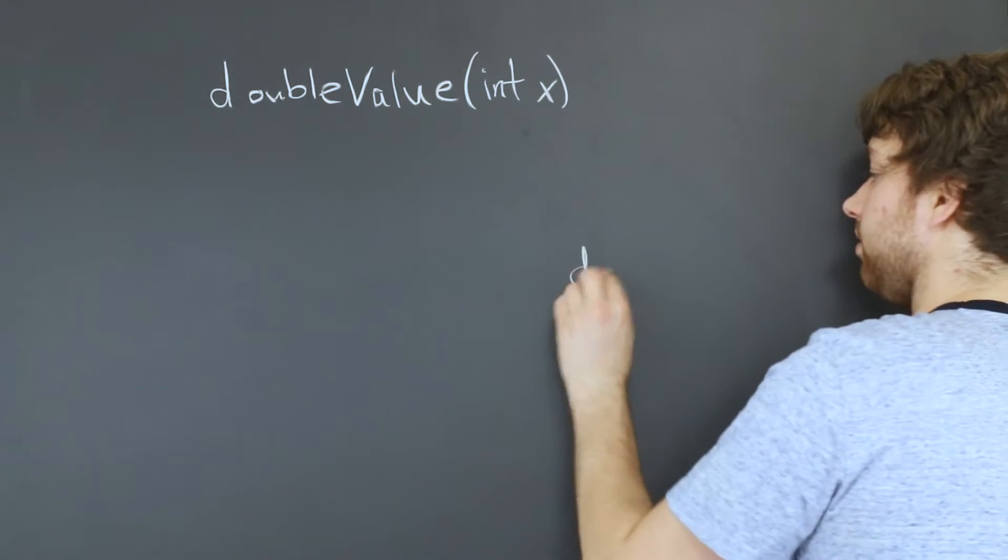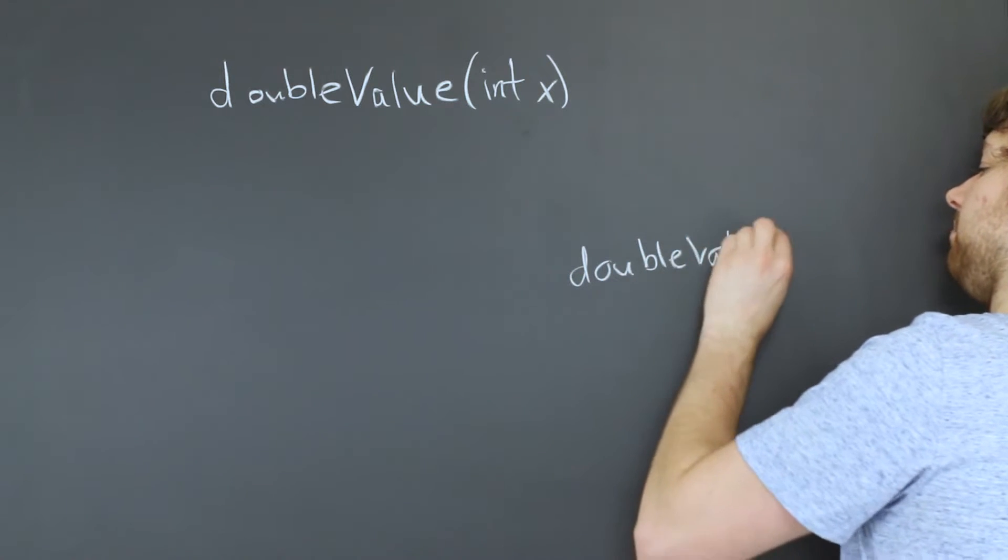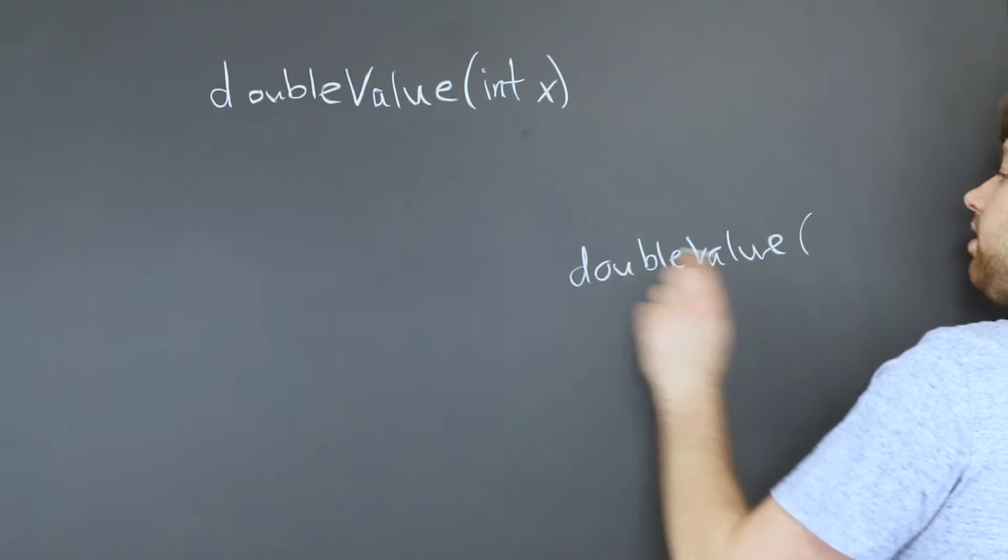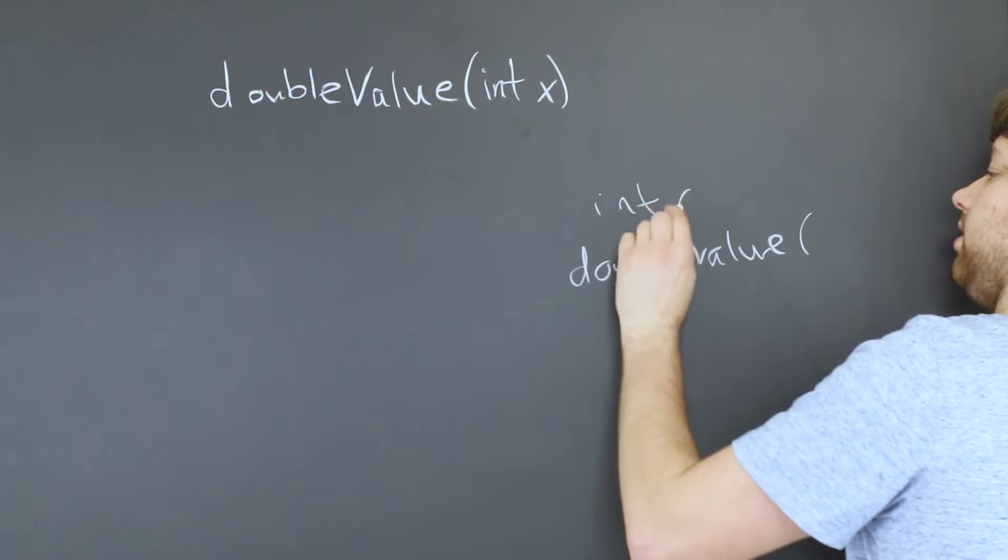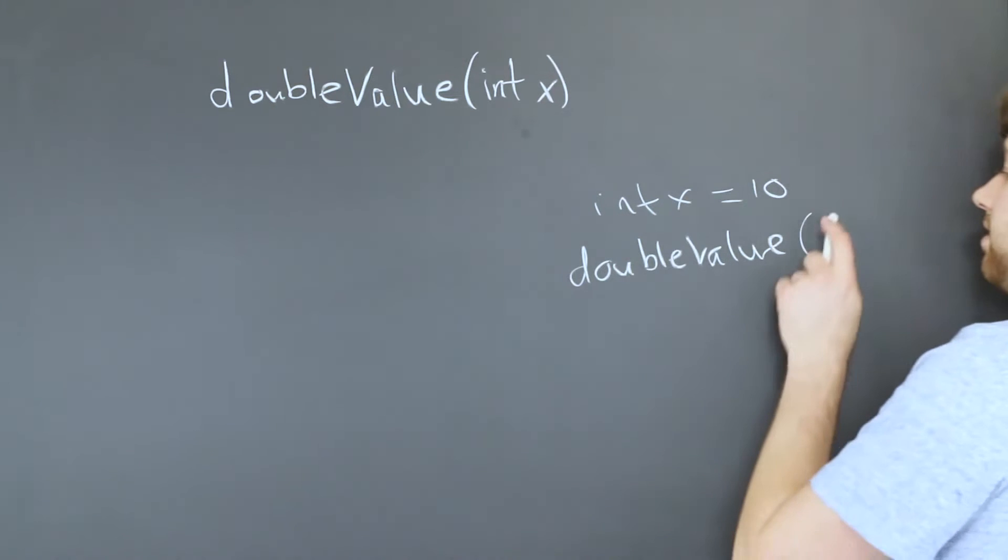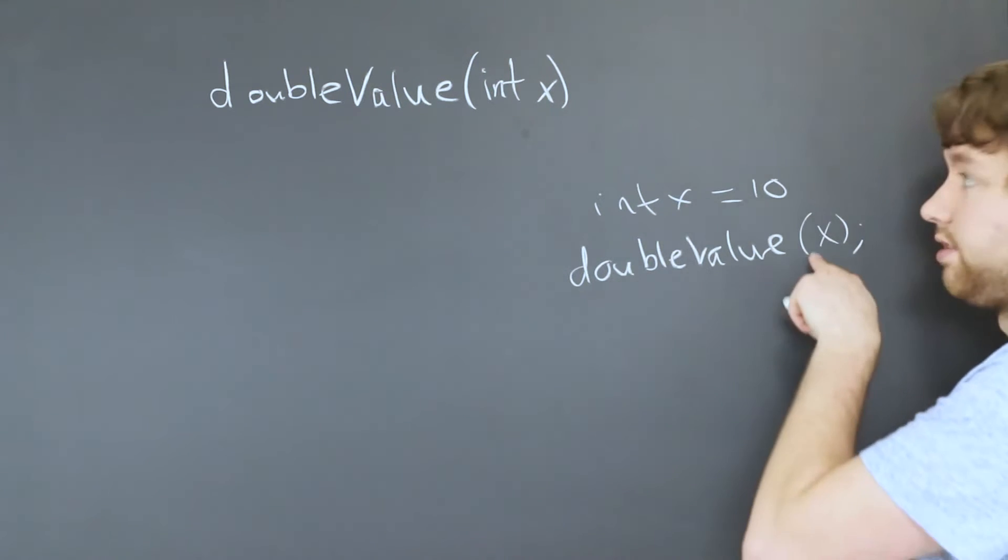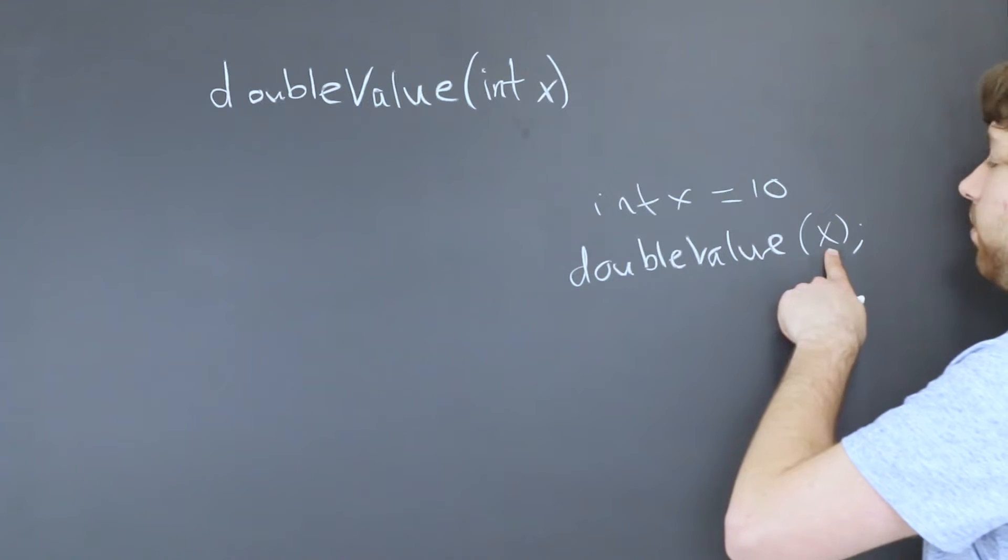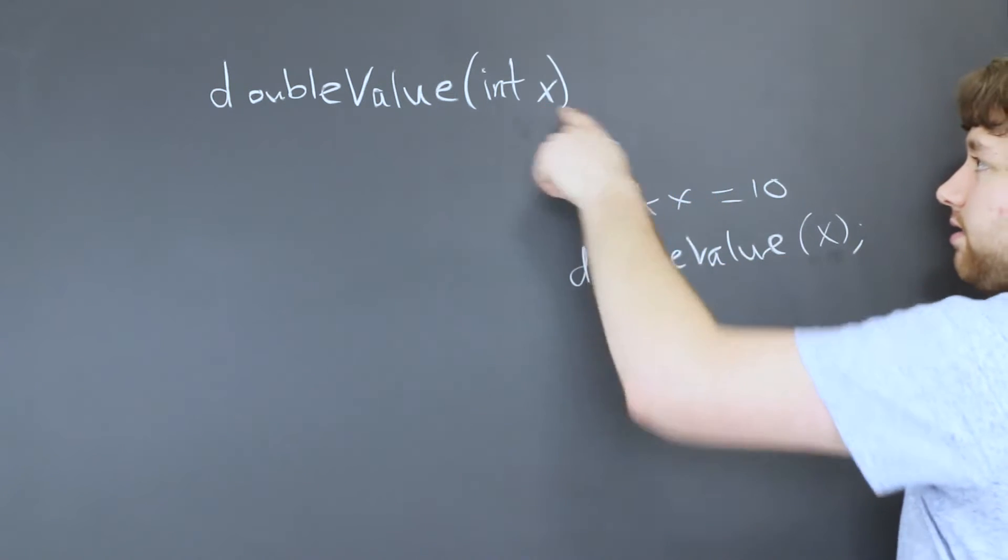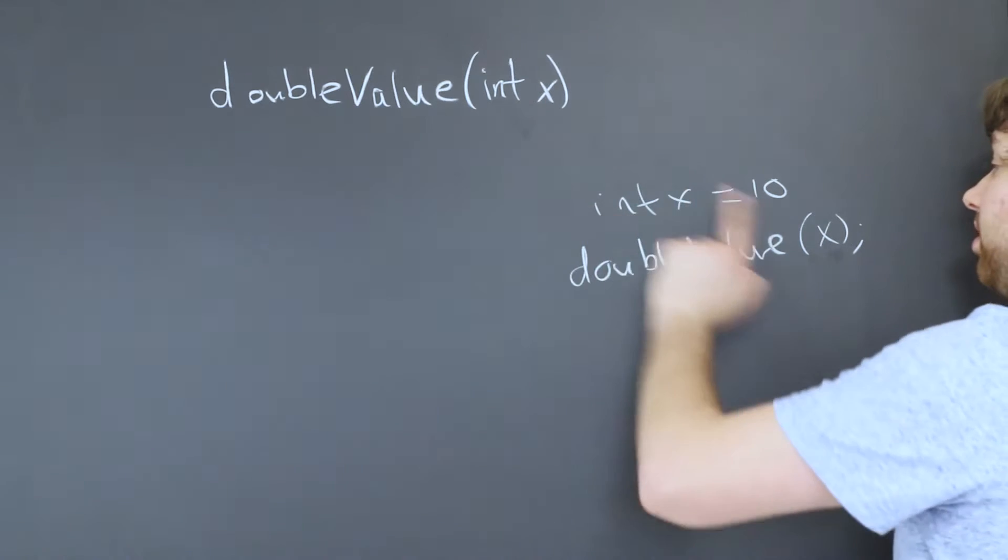When we call this in our code and we pass in some value or variable, let's say we have int x equals 10 and we pass in x here. This is an argument. The value of x gets copied into this x. There are two x's. These don't have to be named the same thing.